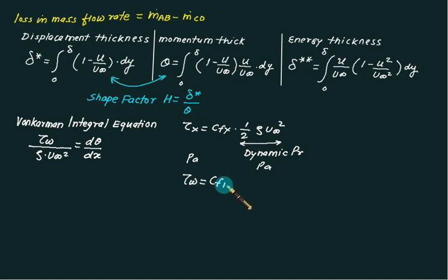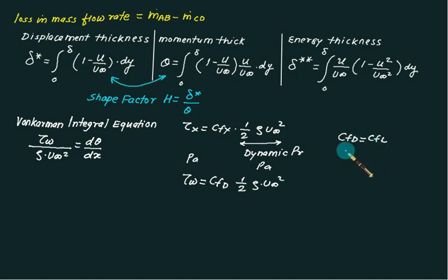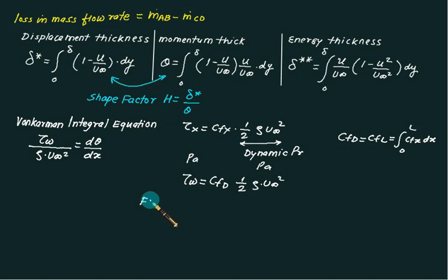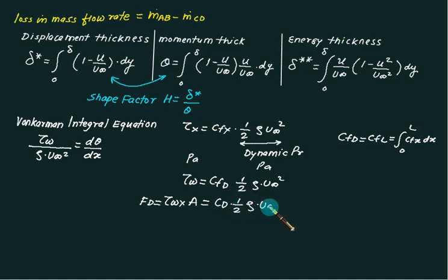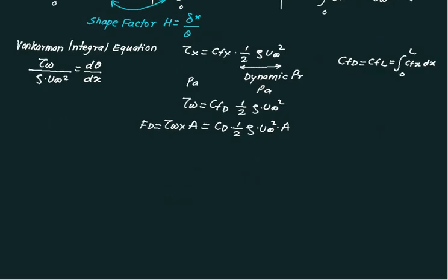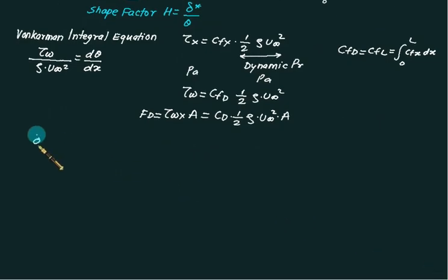Similarly, the wall shear stress can be calculated as C_D (or C_fL) multiplied by one-half rho u-infinity squared, where C_D is the total value of C_fx over the range 0 to L. If we multiply tau-w by area we get drag force: drag force equals C_D multiplied by one-half rho u-infinity squared multiplied by area. In the case of laminar flow, the boundary layer thickness at any distance x, delta-x, is given as 5x divided by the square root of Re_x.